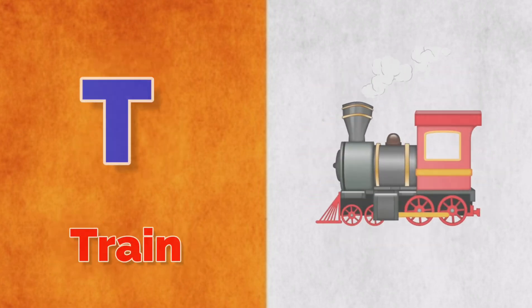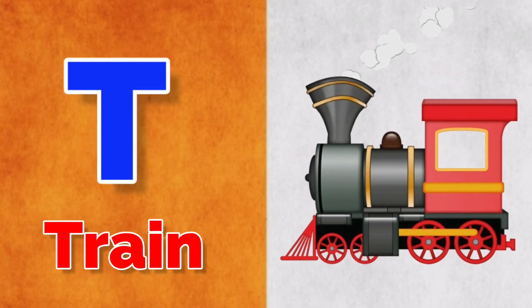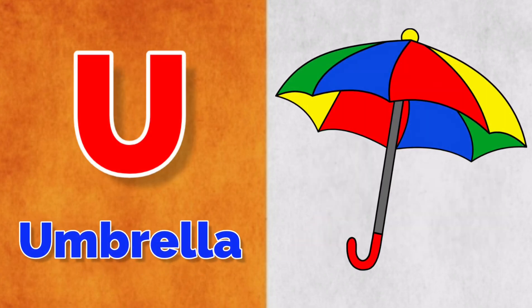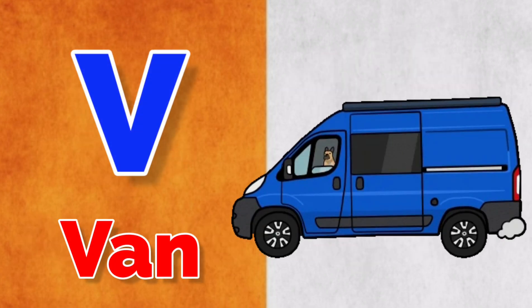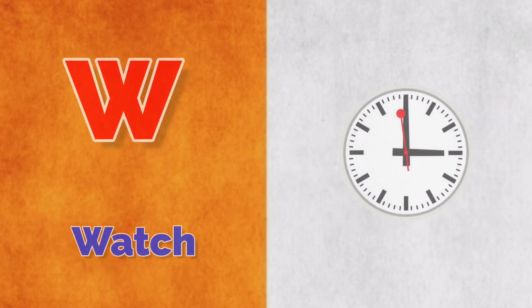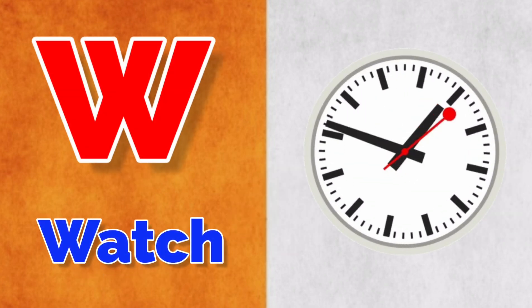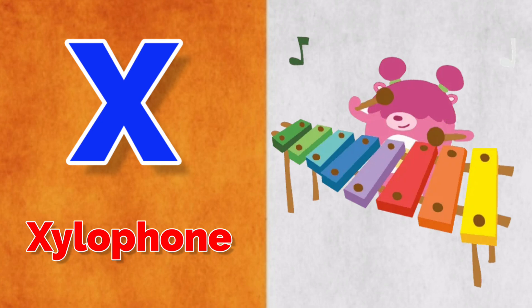S for sun, T for trend, U for umbrella, V for bed, W for watch, X for xylophone.